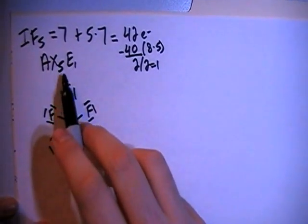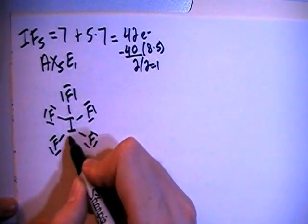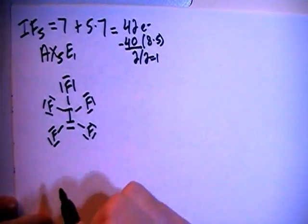Okay, so that takes care of the X5. Now we have to talk about the E1 which is the non-bonding pair of electrons on the central atom. So we can just put that right here. That's that one non-bonding pair. Okay, and this is going to end up being our final structure.